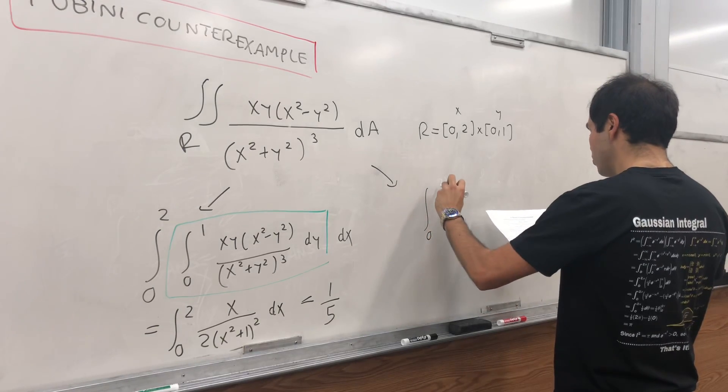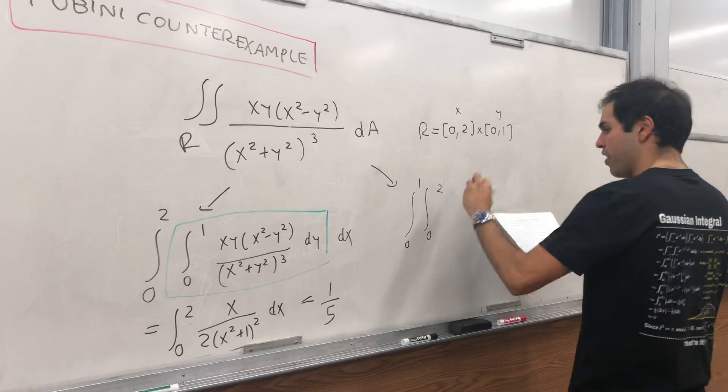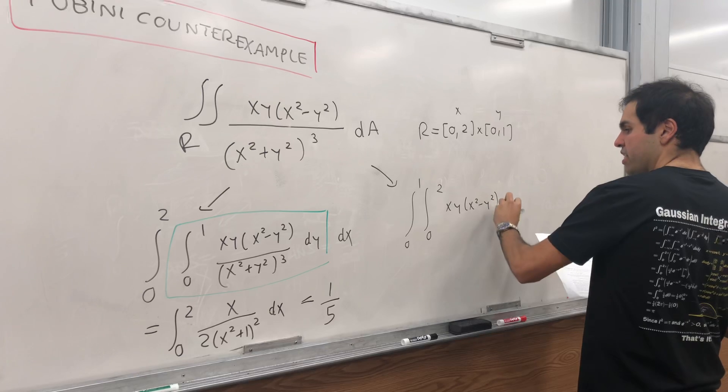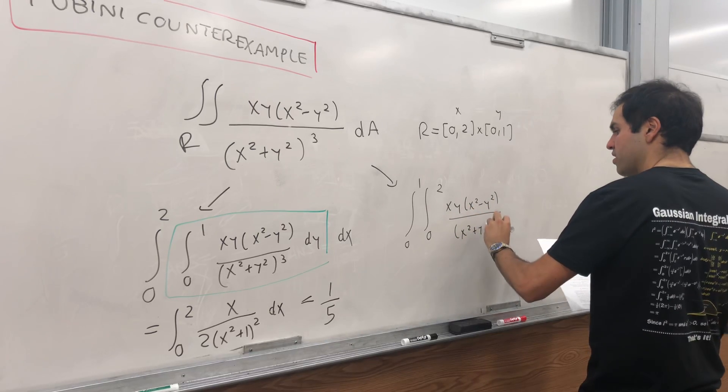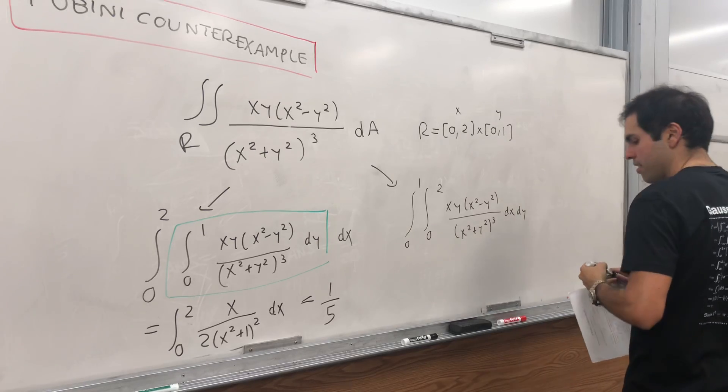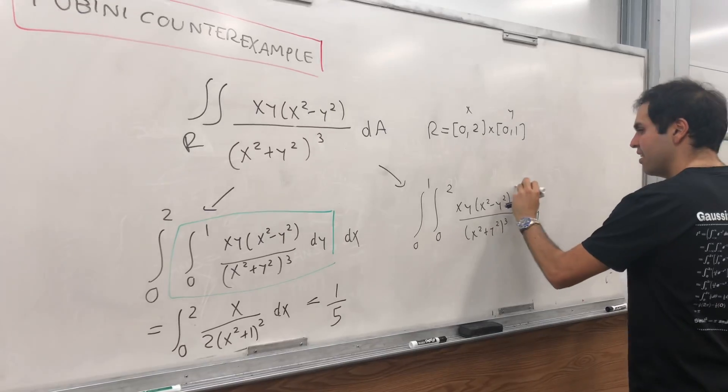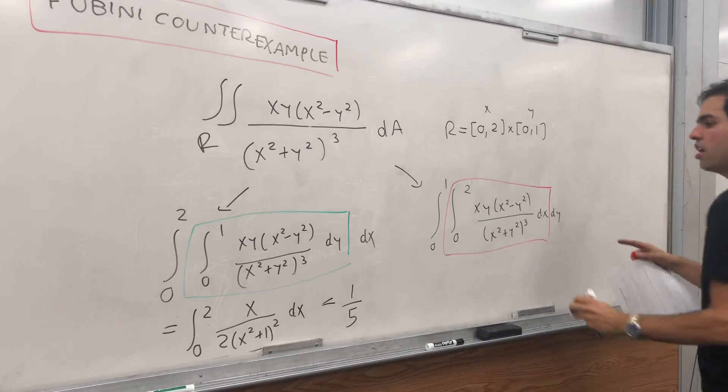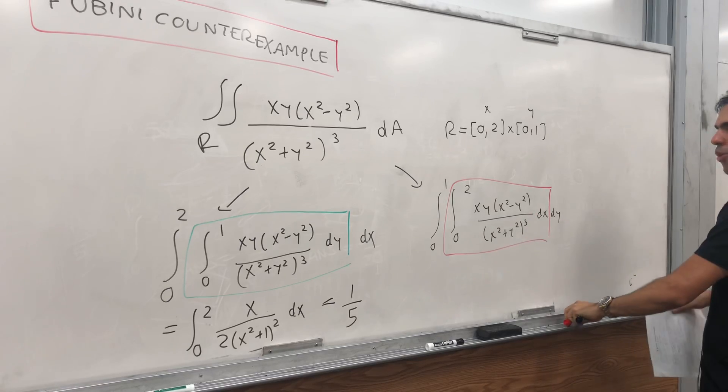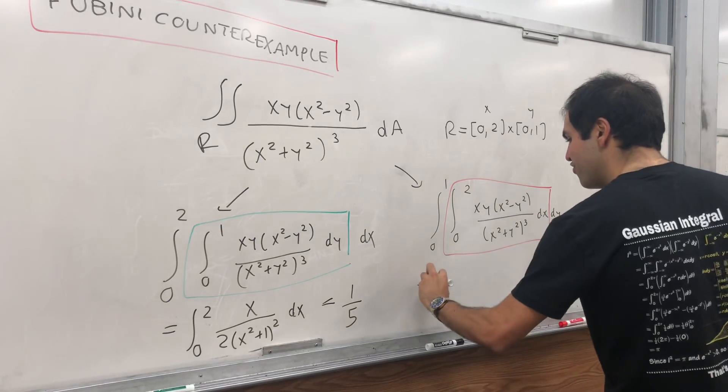Integral from 0 to 2 and then 0 to 1 of the same function, xy times (x squared minus y squared) over (x squared plus y squared) cubed dx dy. Now let's integrate that. And for this, you can use another u substitution. In this case, u is x squared minus y squared, but with respect to x.